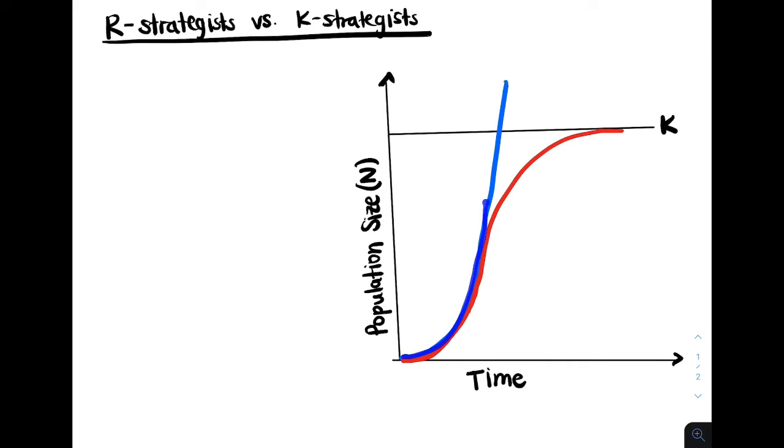And this blue curve right here is an exponential growth curve. Exponential growth has a rate of change that increases as the population size increases. Because of this, it means that the population size is unbounded. So regardless of any environmental conditions or the number of resources available, the population size is just going to grow forever.